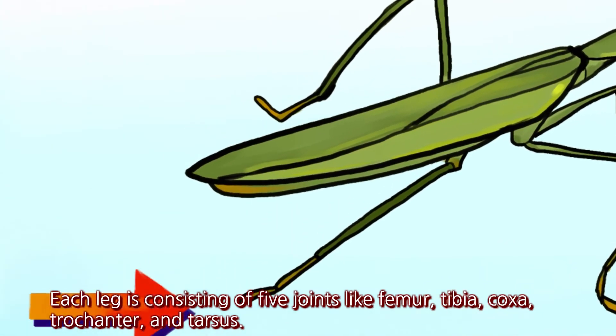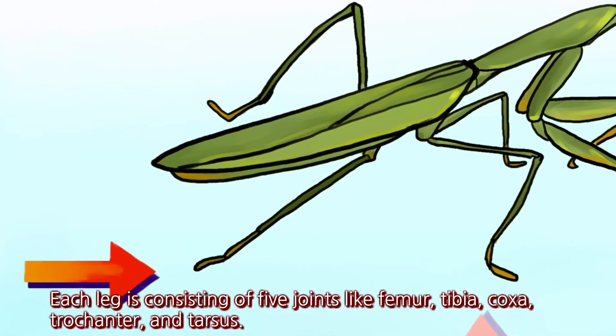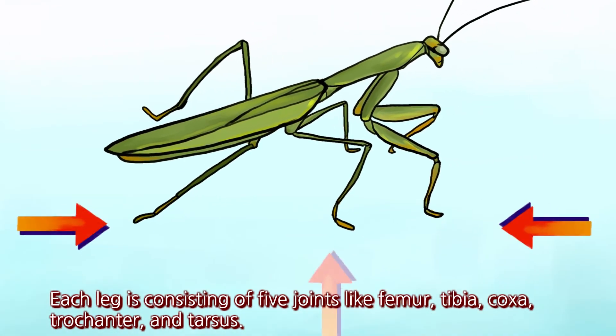Each leg consists of five joints: the femur, tibia, coxa, trochanter, and tarsus.